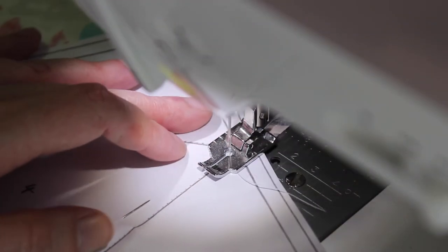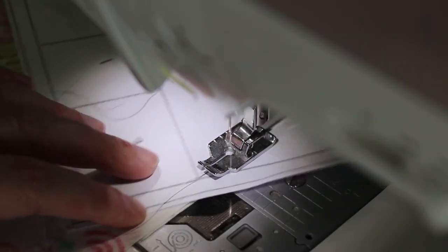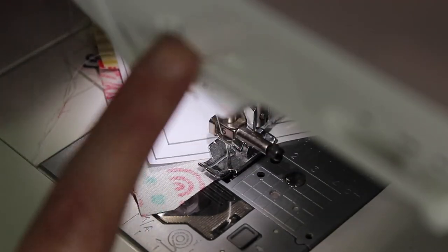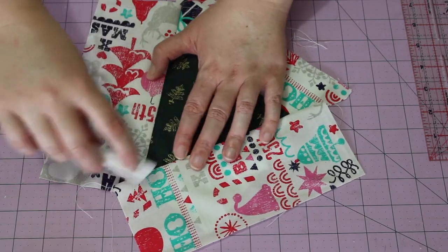And then at the sewing machine, sew from one edge to the other, following the line between sections four and six. Then firmly press this last seam open.